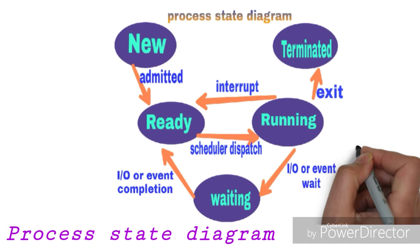For example, suppose a higher priority process arrives in the ready state while a lower priority process is running with the CPU. We can interrupt the lower priority process, send it back to the ready state, and the higher priority process then changes its state to the running state with the help of the dispatcher.